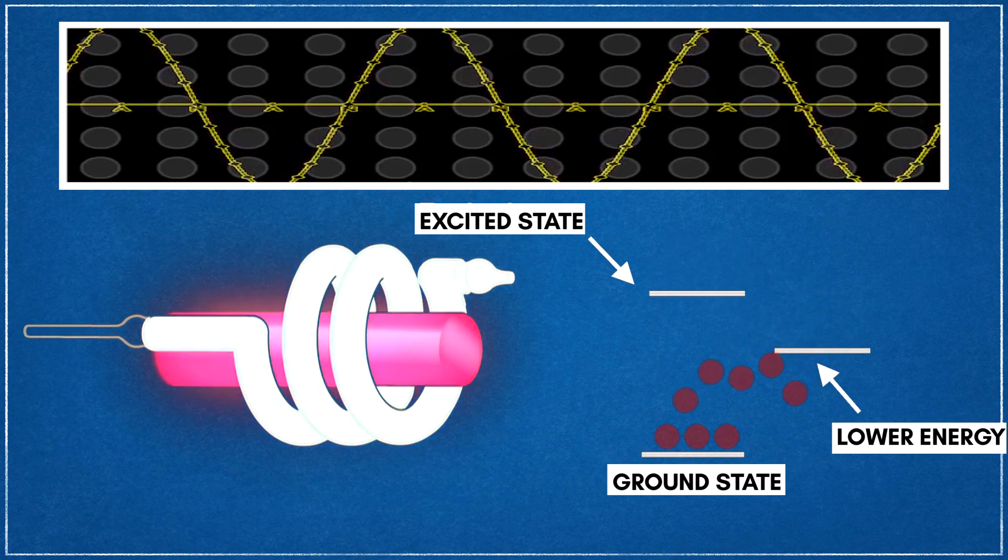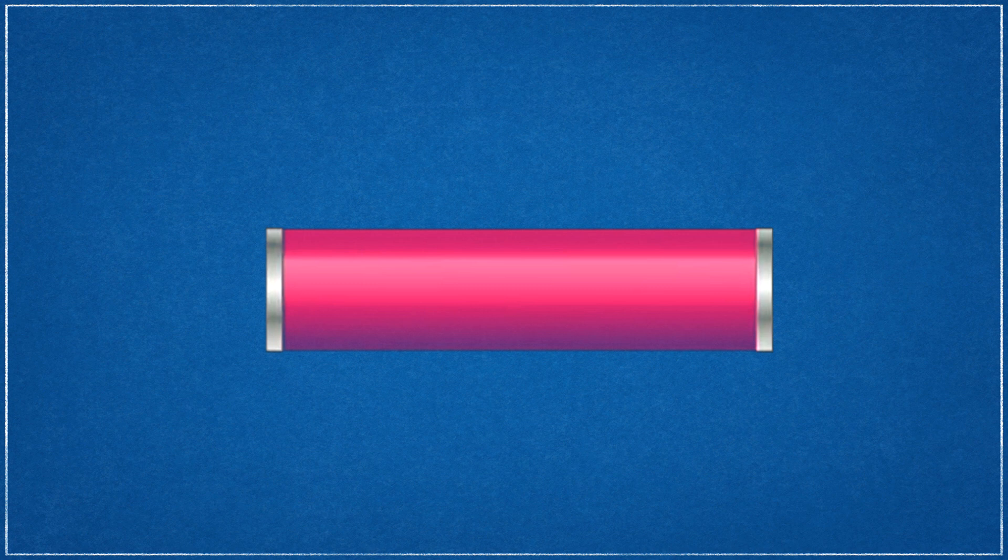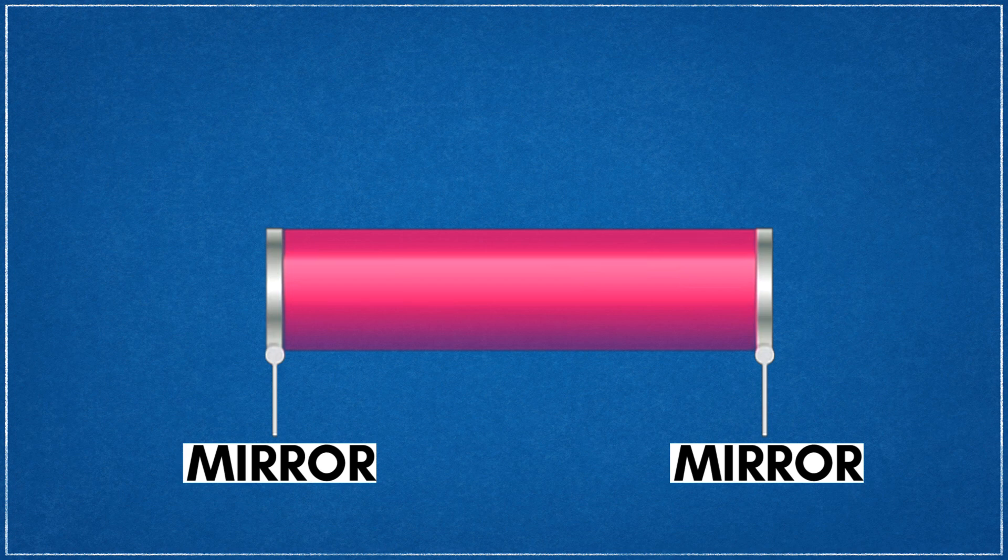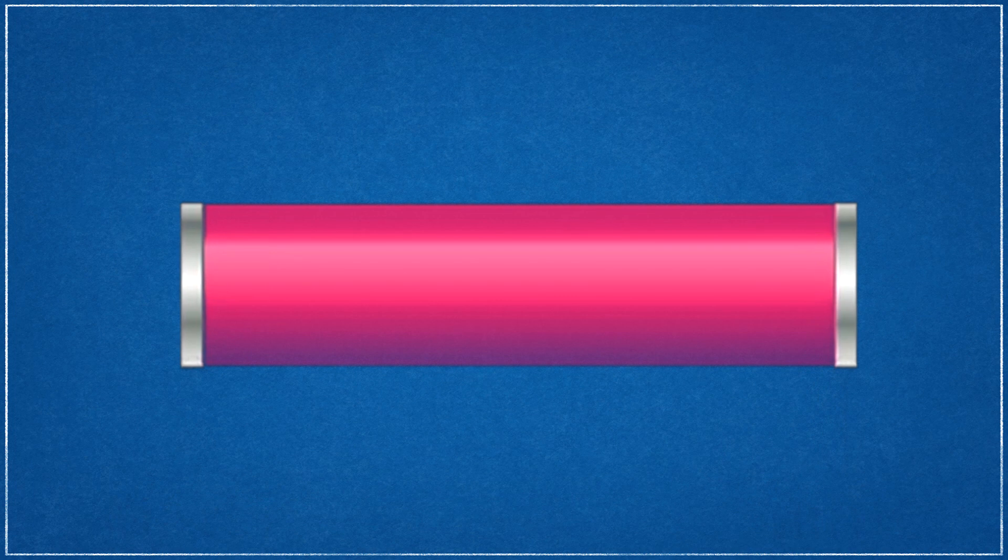To get a narrow beam with all the light rays parallel and a nearly single wavelength requires an addition to our ruby laser example. To achieve this, Maimon incorporated silvered ends to reflect the light within the ruby cylinder, creating a resonance cavity. He made the two ends of the rod parallel to each other. From top to bottom, the distance between these two mirrors differs by no more than 200 nanometers. Two important things take place inside the resonance cavity.